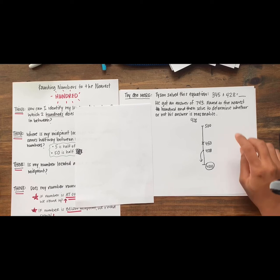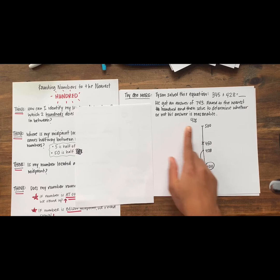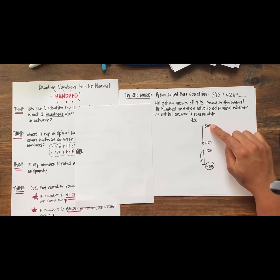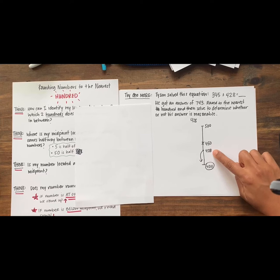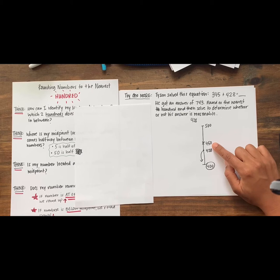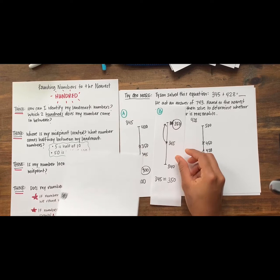Nice job on this try one more. I saw so many friends accurately round 428 by identifying 400 and 500 as the hundreds that our number is in between, labeling 450 as our midpoint, and then rounding 428 down to 400 because it was below 450. Nice work.